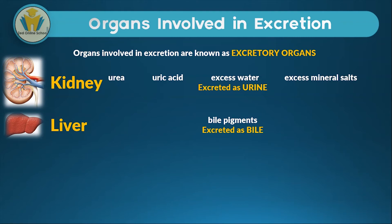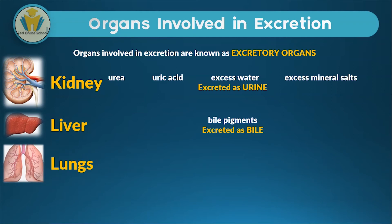The next organ we're going to look at is the lungs. The lungs are also very important in excreting waste from the body. The waste they excrete is carbon dioxide, and as you breathe, the air that you breathe out contains carbon dioxide — even right now, carbon dioxide is being excreted by you.